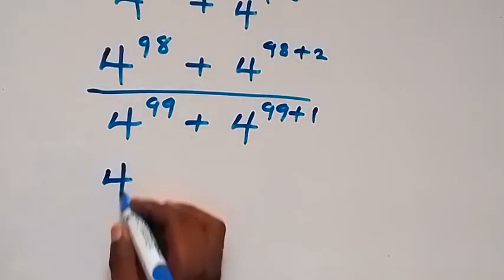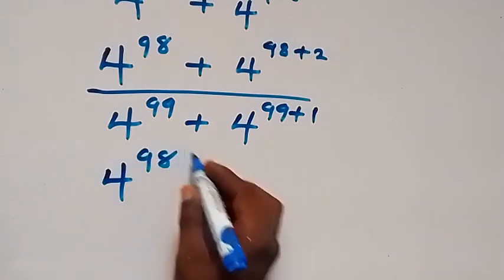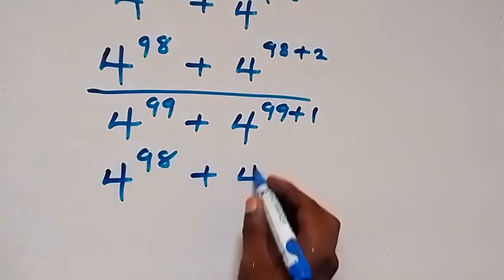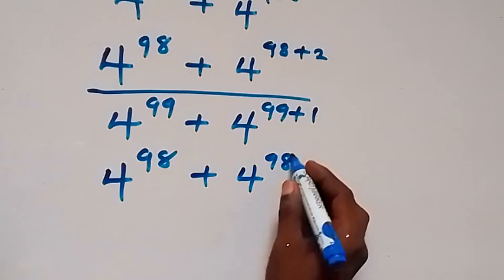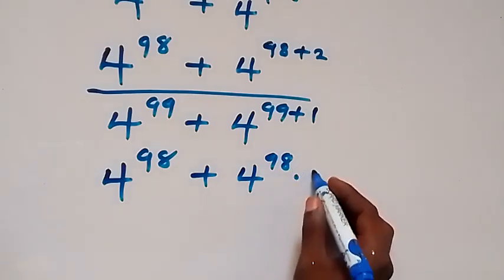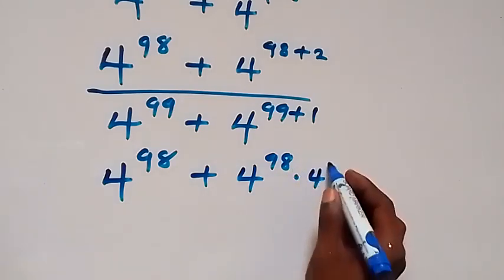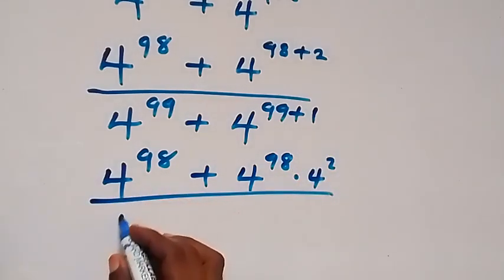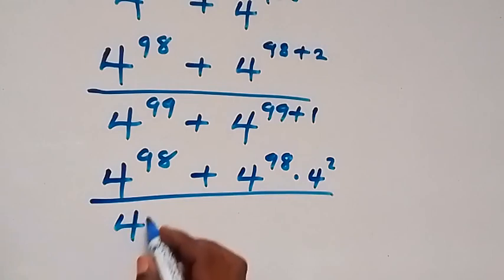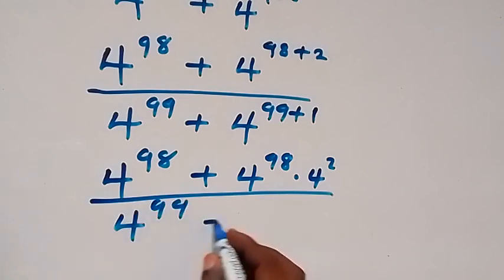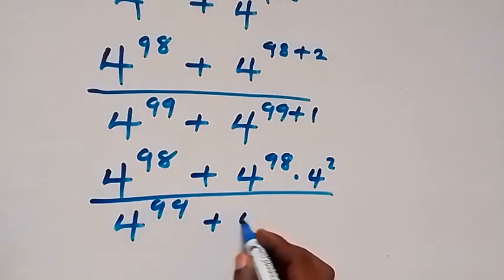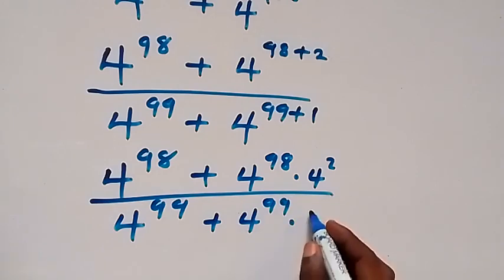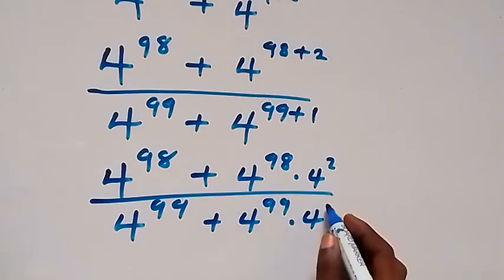So we have 4 raised to power 98, plus 4 raised to power 98 times 4 raised to power 2, then divided by 4 raised to power 99, plus 4 raised to power 99 times 4 raised to power 1.